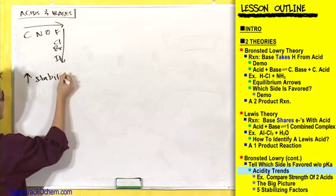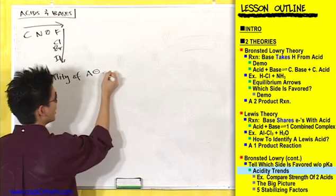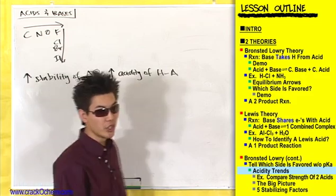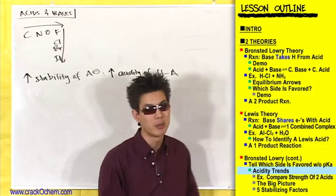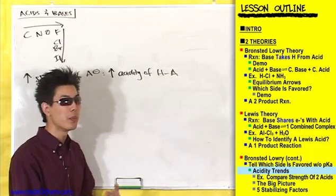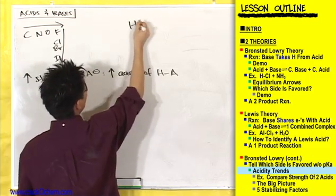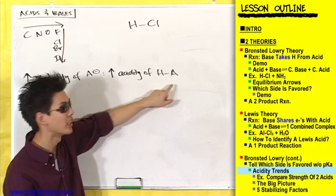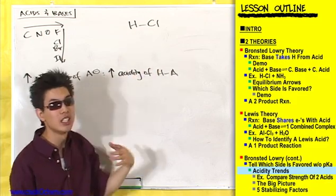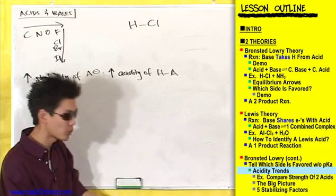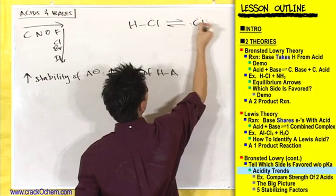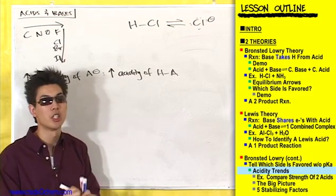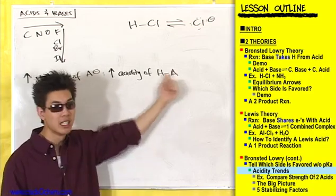As you increase the stability of A minus, this is going to increase the acidity of HA. A minus is the conjugate base; HA is the acid. For something like HCl, A just stands for any atom that the hydrogen is connected to - so chlorine is represented by A here. HA is just the generic way of saying any acid. When HCl gets deprotonated in an acid-base reaction, it turns into Cl minus - going from HA to A minus. That's all HA and A minus are talking about.